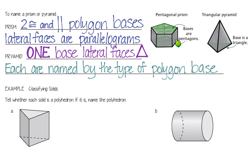Each of these, a pyramid or a prism, whether it's a prism or a pyramid, they're named by the type of polygon base they have. It says pentagonal prism because both the bases are pentagons. Over here, we had a base that was a triangle, so that's why this is called a triangular pyramid.